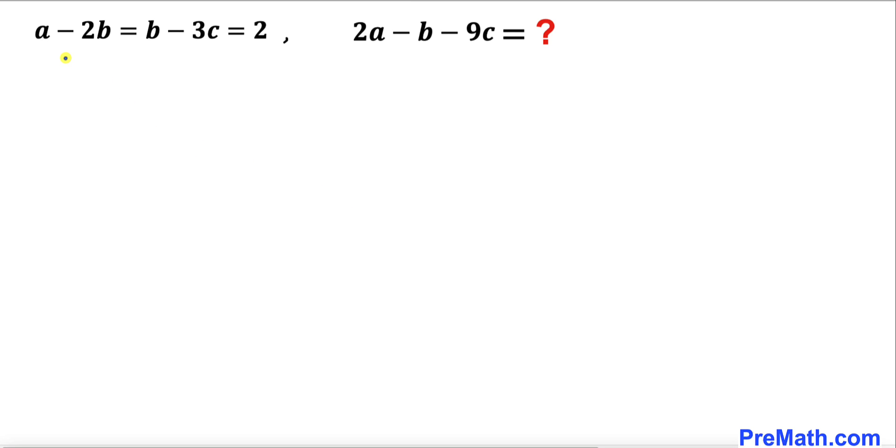Welcome to PreMath. In this video we have got the system of equations a minus 2b equals b minus 3c equals 2, and now we are going to find the value of 2a minus b minus 9c.